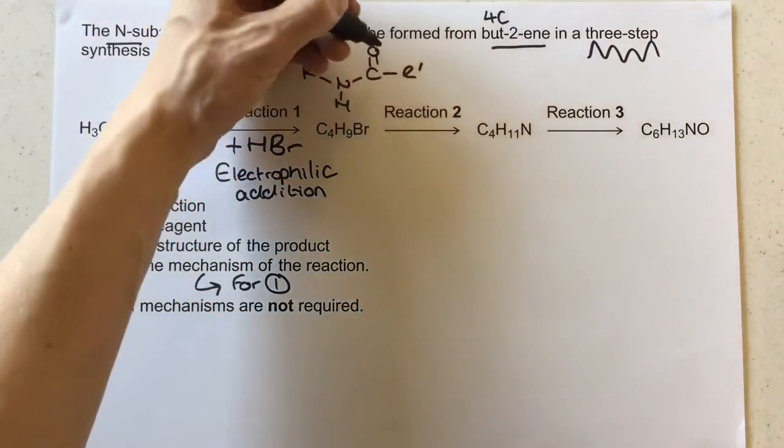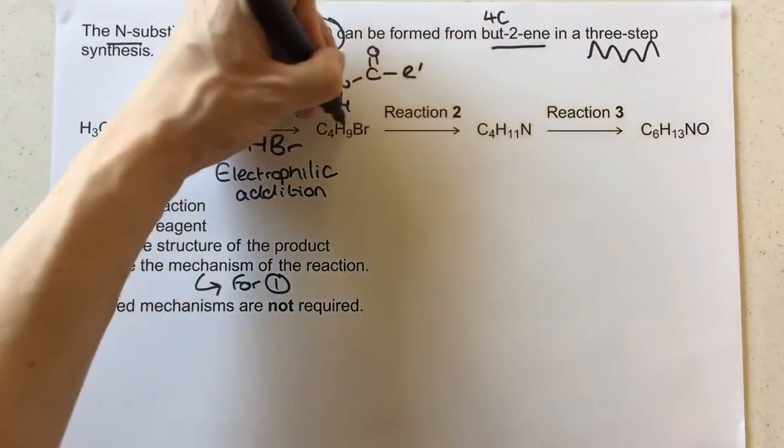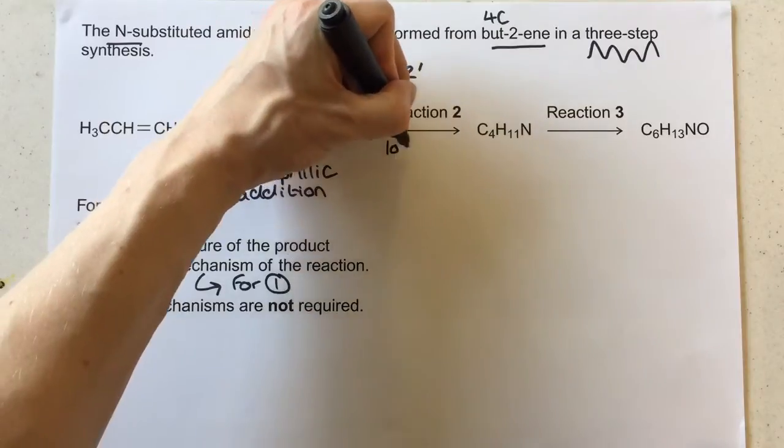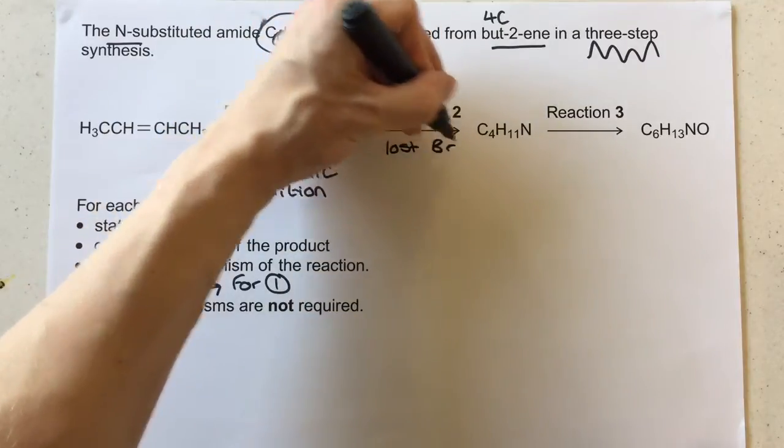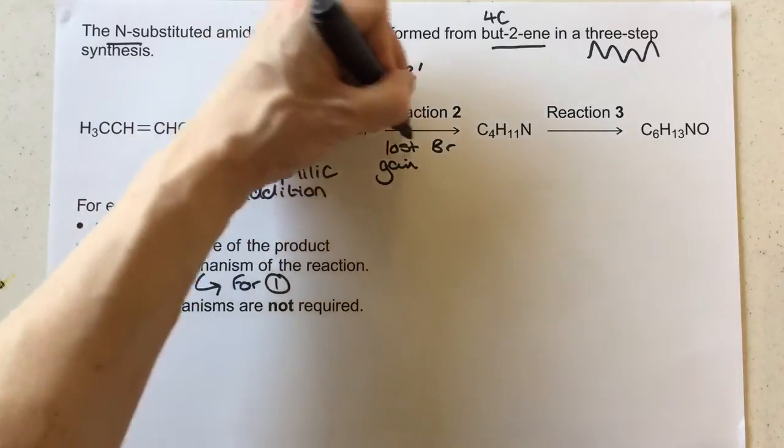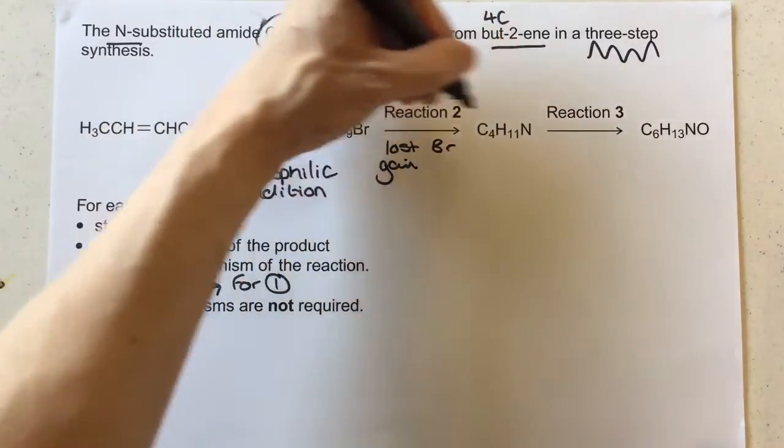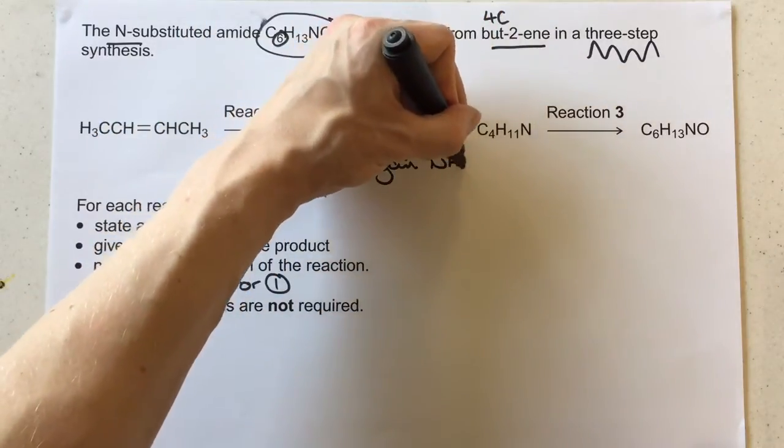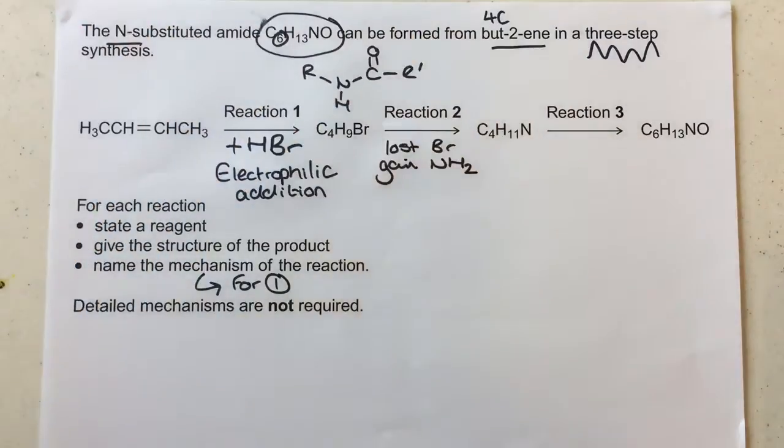Now moving over to reaction two then, you can see here we've obviously lost our Br, so we've lost Br, but we have a gain of, if you look at the number of hydrogens and the new nitrogen, we've gained an NH2. So this is a haloalkane to an amine reaction, which on your large organic sheets, if it's still the same version, this is reaction number 23.